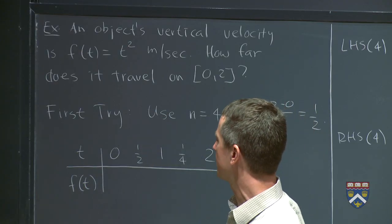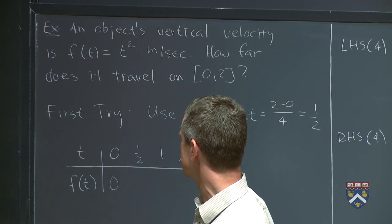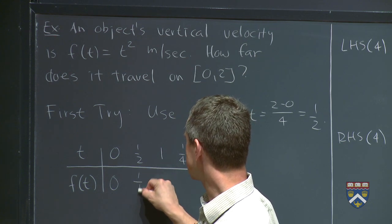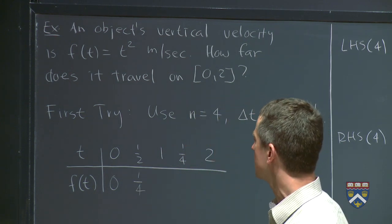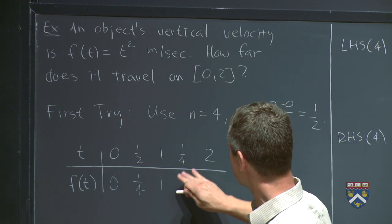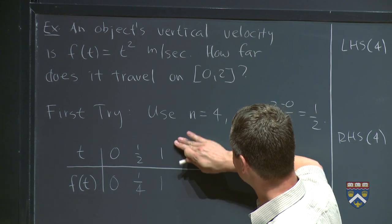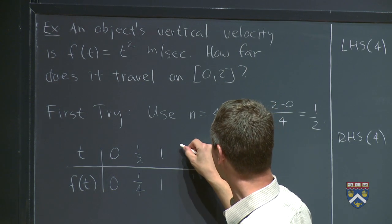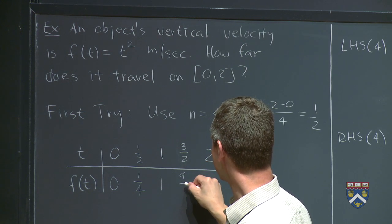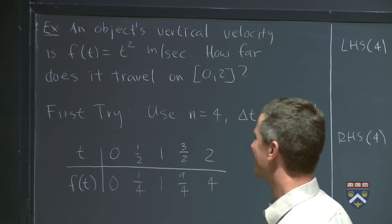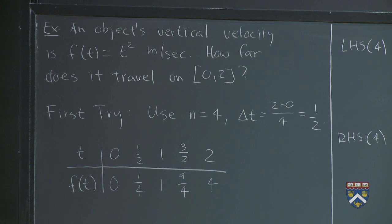So now let's figure out what the object's velocity is at each of these points. We just plug these into the formula up here. So at time zero, the velocity is zero meters per second. At time one half, it's a quarter meter per second. Then one meter per second. This should probably say one and a half, three halves. So then we're going nine quarters of a meter per second, and then we finish out the interval going four meters per second.